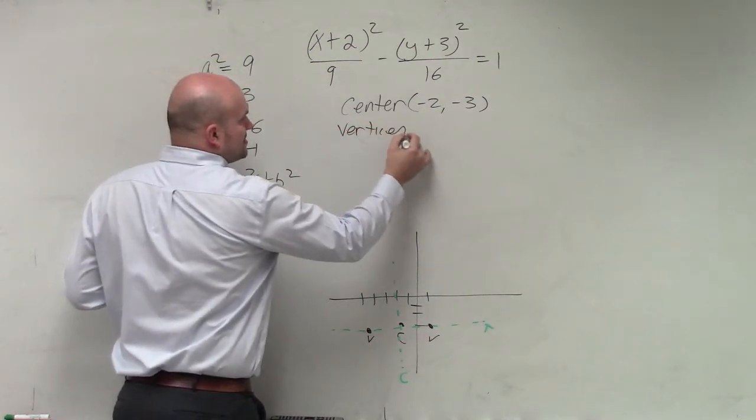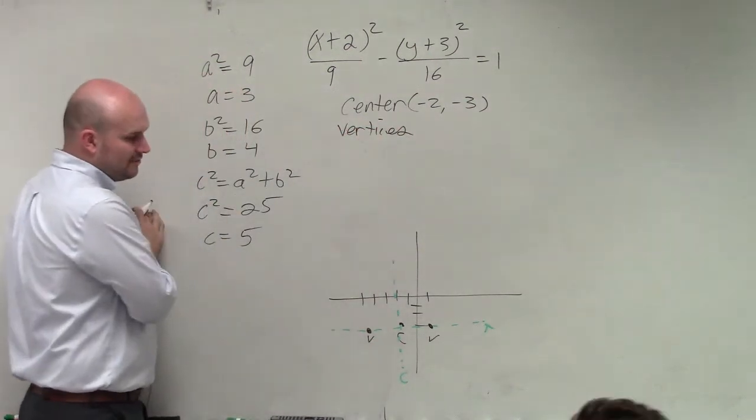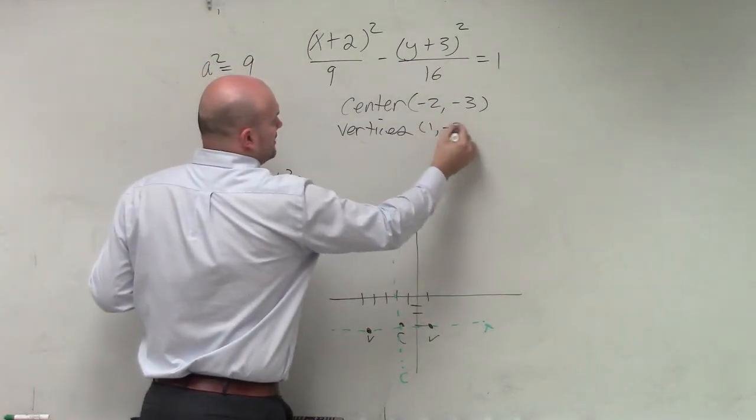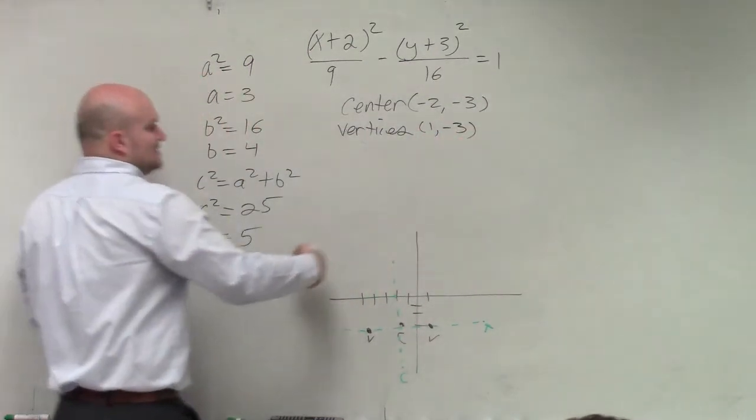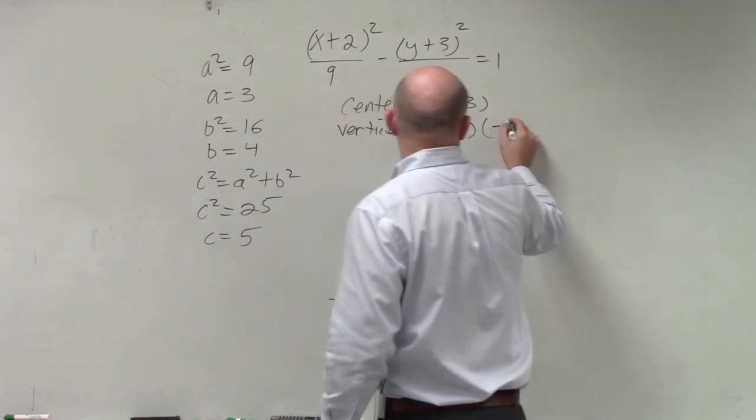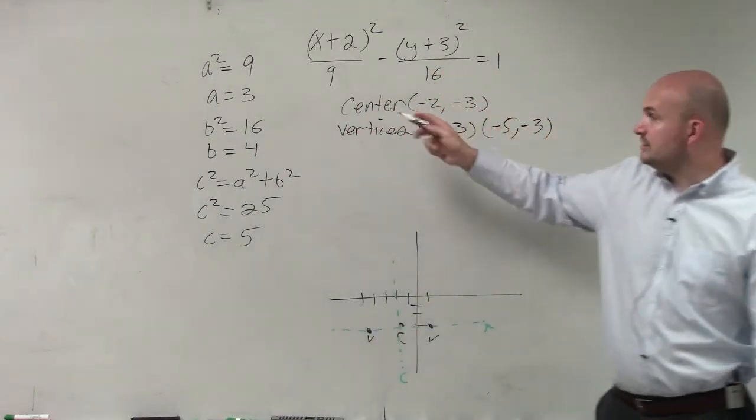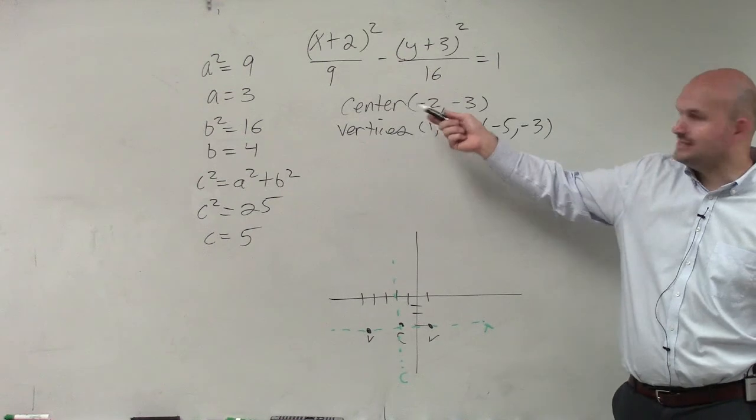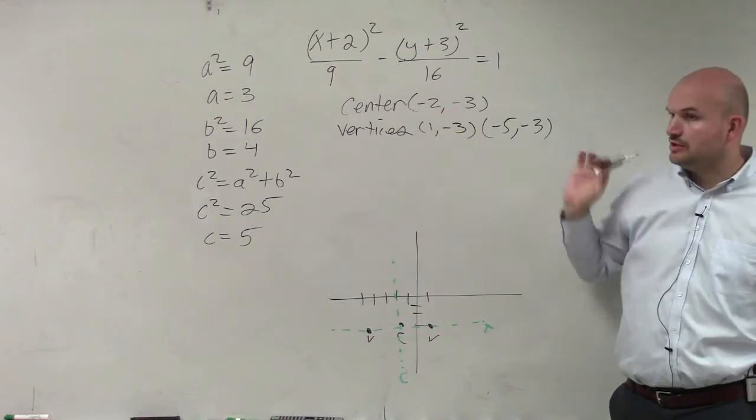I can label those vertices just by looking at my graph, which is 1, negative 3, as well as negative 5, negative 3. Basically, all I'm doing from my center is adding and subtracting 3, going left and right.